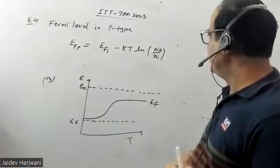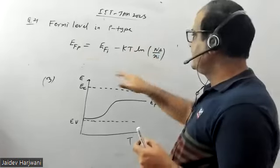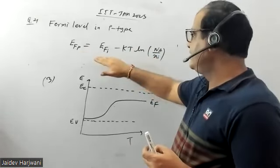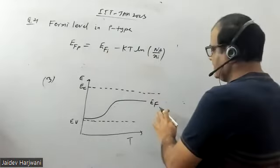When ni is equal to na, this function will become zero and that Fermi level will be equal to the Fermi level of intrinsic level. So this is basically the Fermi level of intrinsic level.